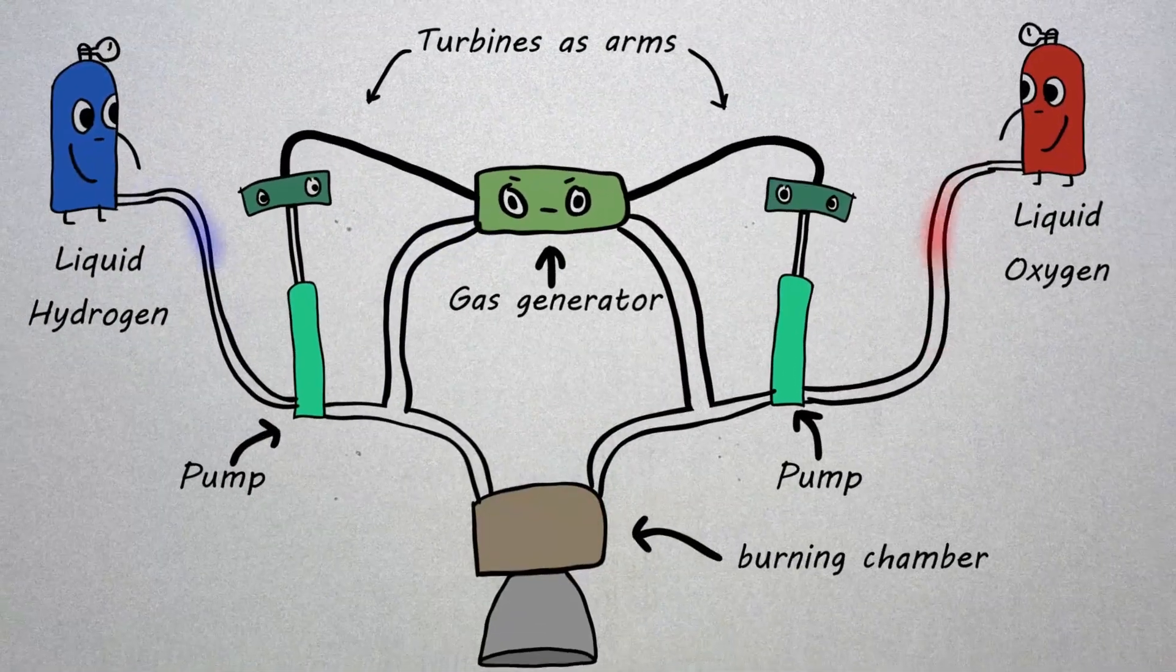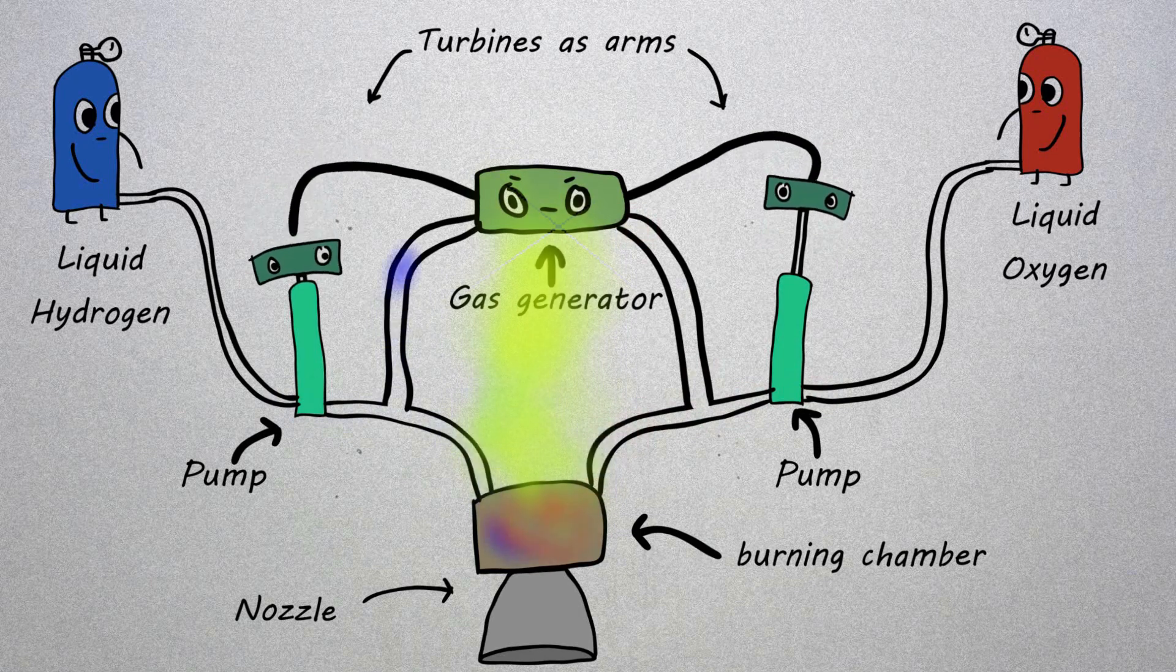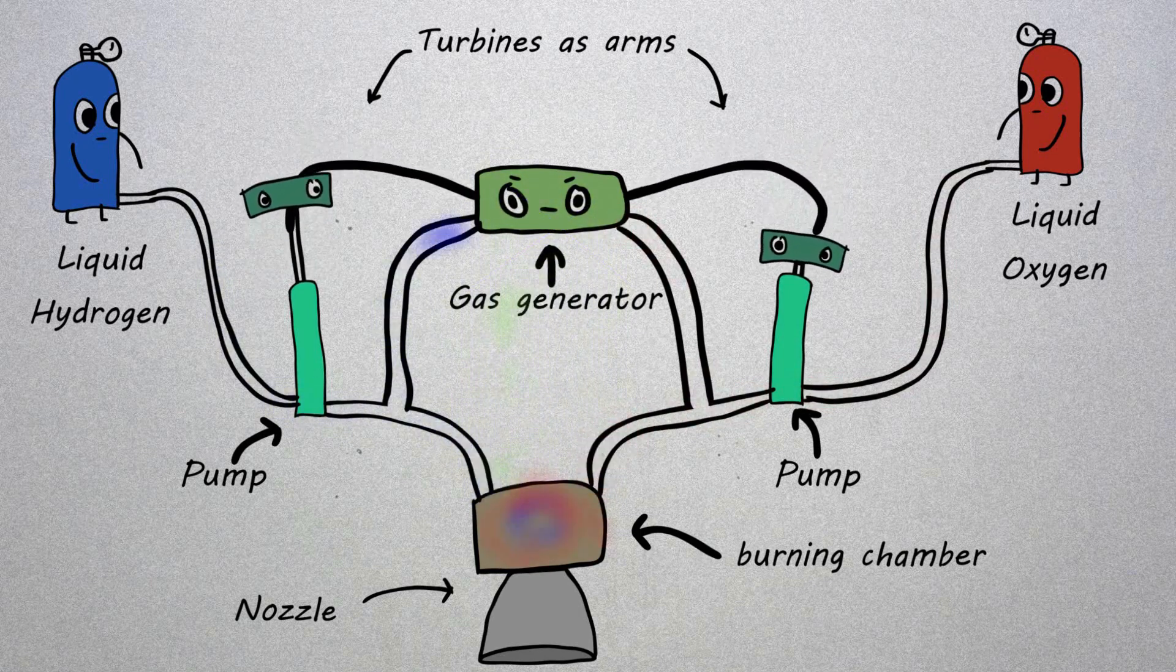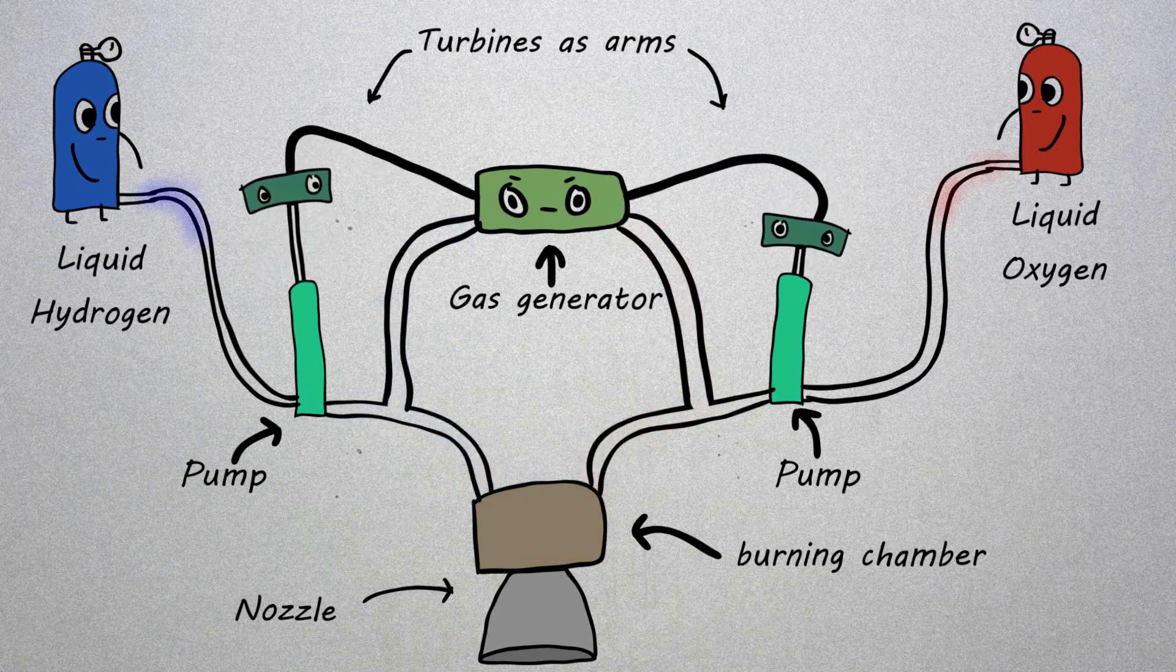It makes hot high pressure steam and gaseous hydrogen that are used to drive the turbine connected to the fuel stuff pump. The still warm gas is then dumped along the walls of the nozzle extension to keep that relatively cool. The rest of the fuel stuff goes off into the burning chambers.